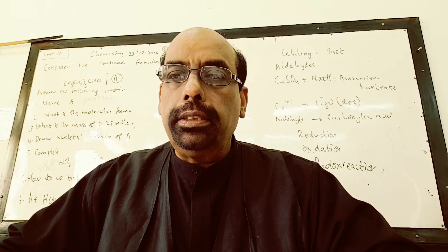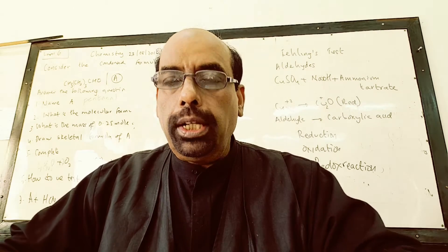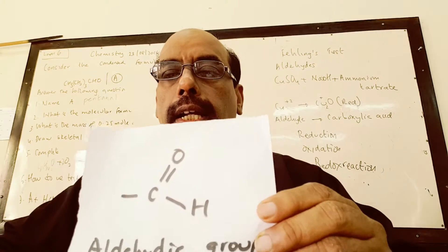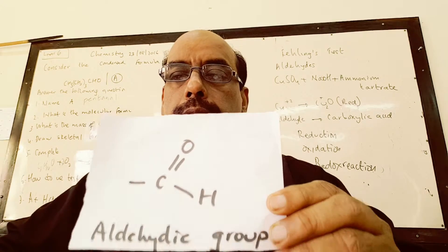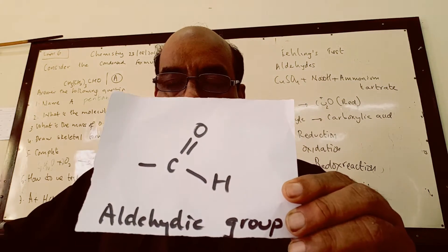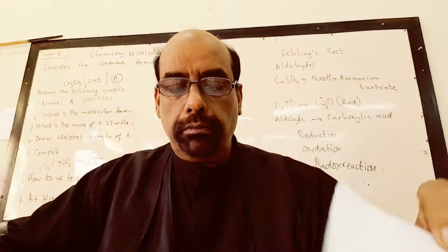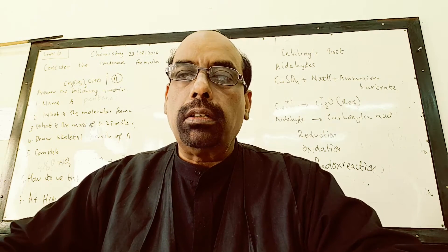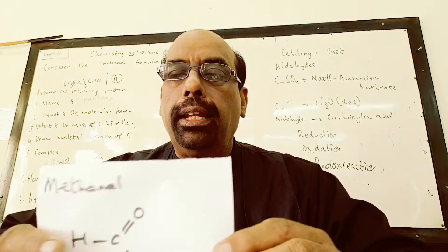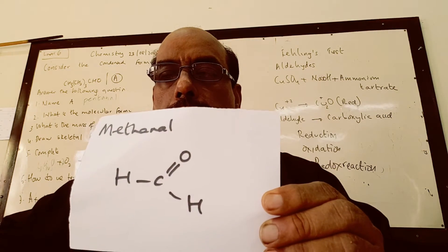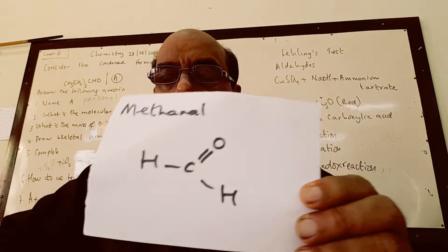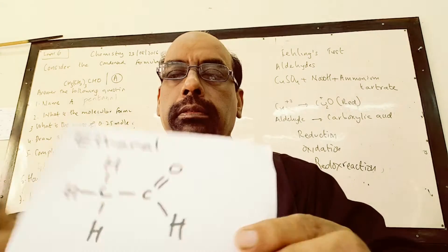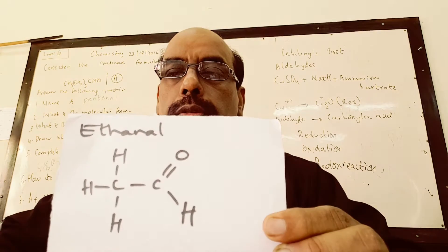An aldehyde is an organic compound which contains the aldehyde group, the CHO group. Examples of aldehydes are butanal, HCHO, and ethanal, CH3CHO.